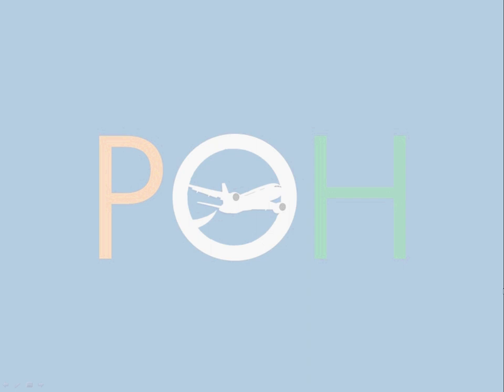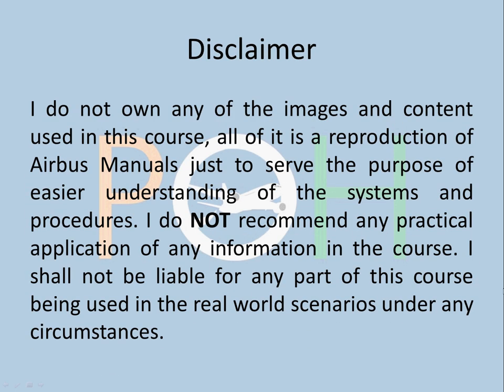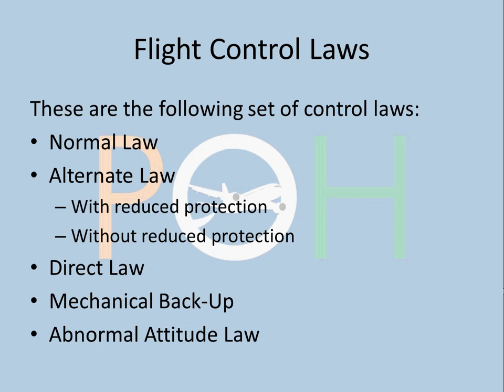Welcome to Planes Overhead and welcome to our next video on the A320 series. Today we are going to do flight control laws. Disclaimer: do not use any of this information in practical application. These are laws that govern the aircraft control. The following set of control laws on the A320 are: normal law, alternate law with reduced protection, alternate law without reduced protection, direct law, mechanical backup, and abnormal attitude law.